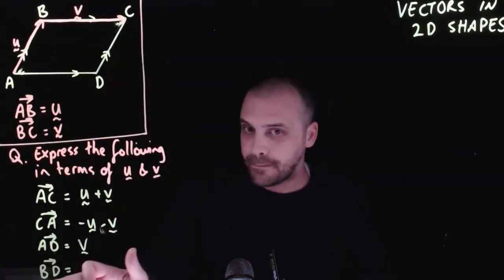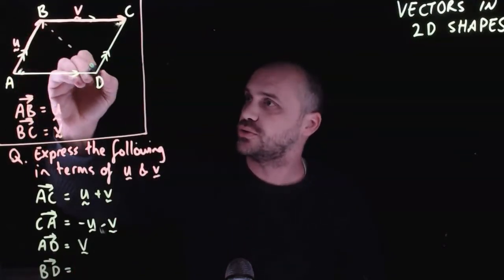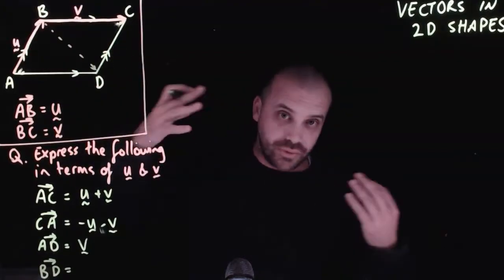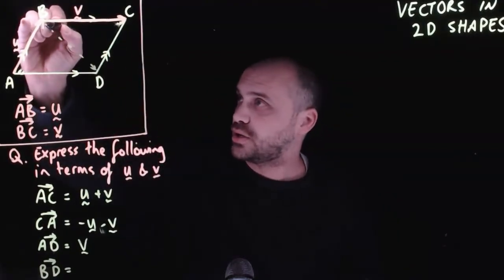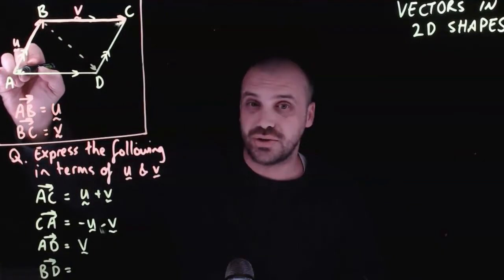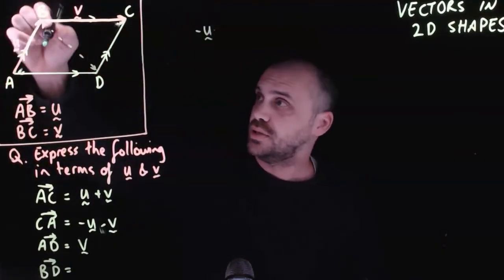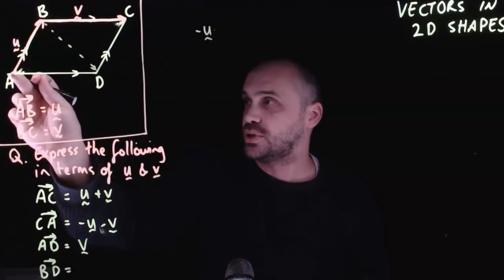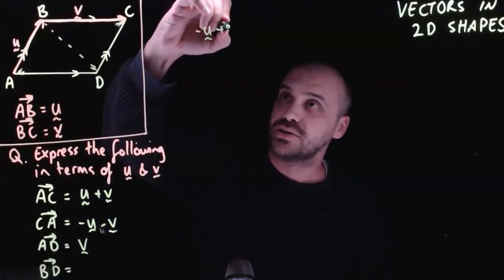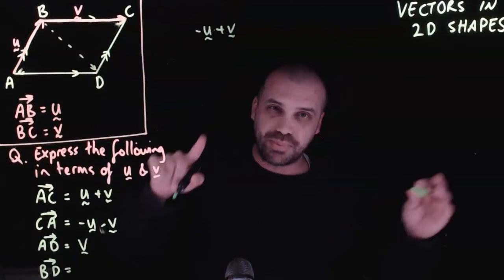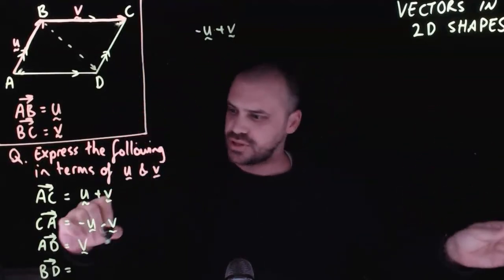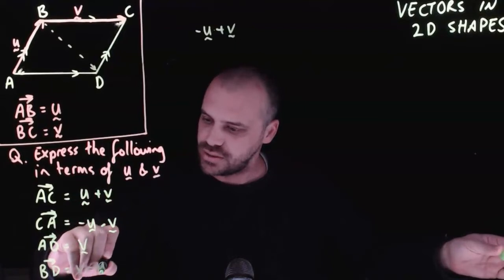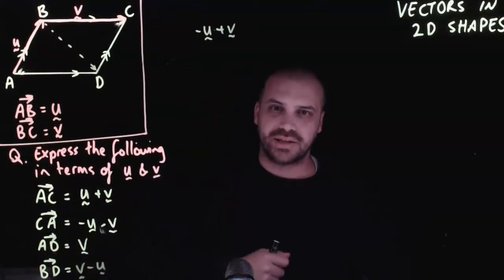Now, what about vector BD going from this point to this point? We can go the short way or through a linear combination. We can start here and go down this U one, which is a negative U. And then along here, which is in the positive direction of the V. So plus V. It might be neater to write that in the reverse and say that vector BD is equal to V minus U. Hopefully, you're getting the hang of this.